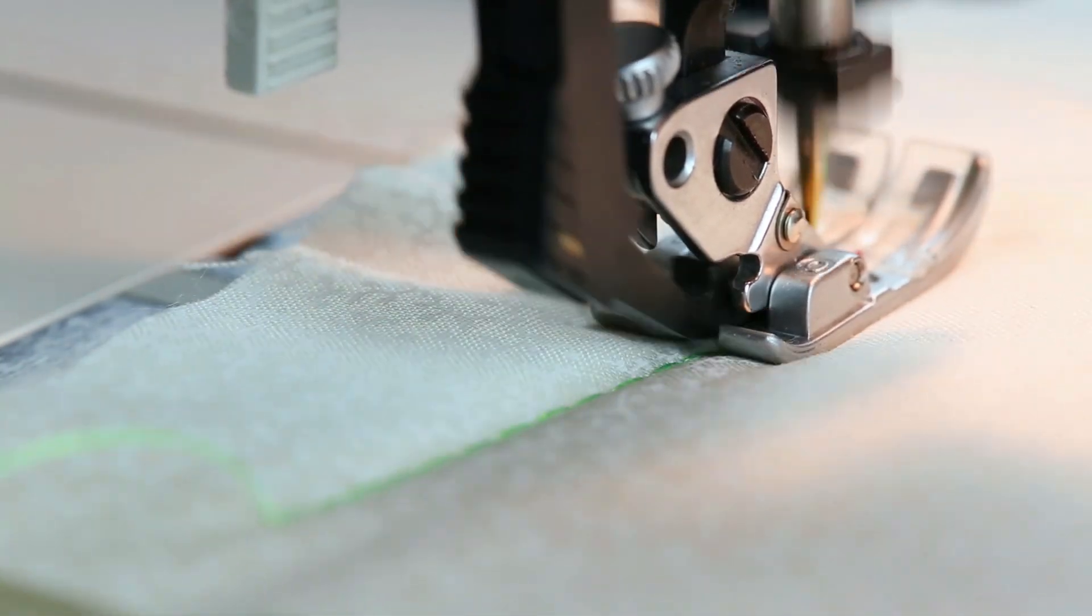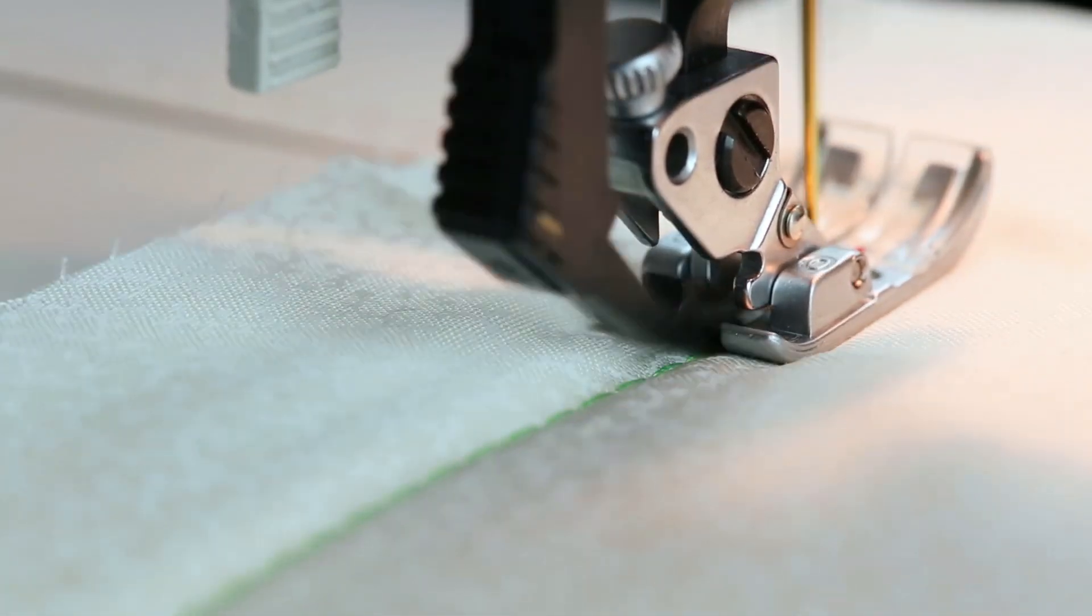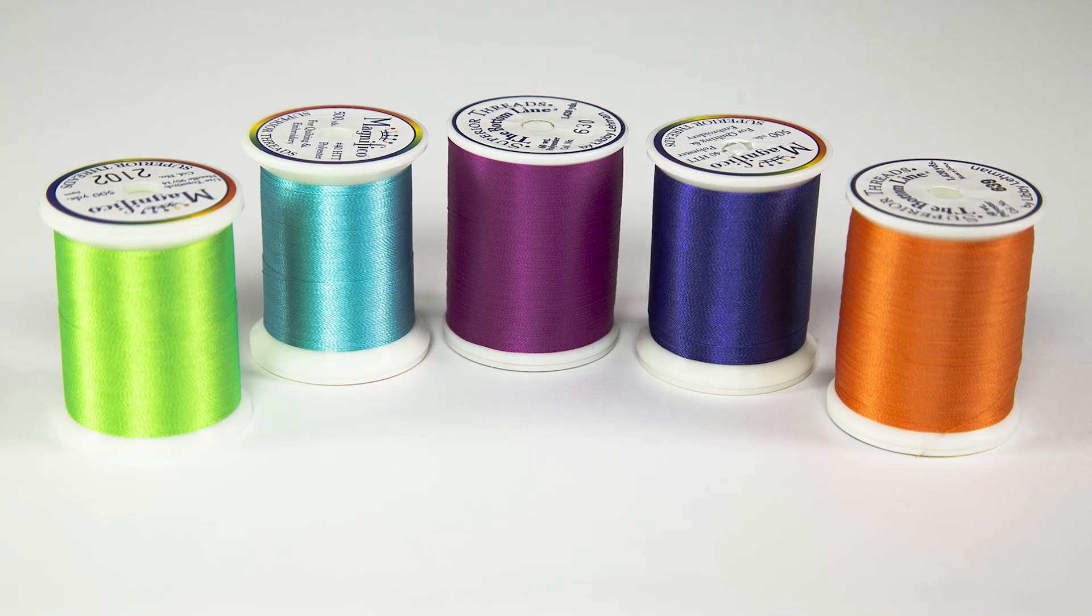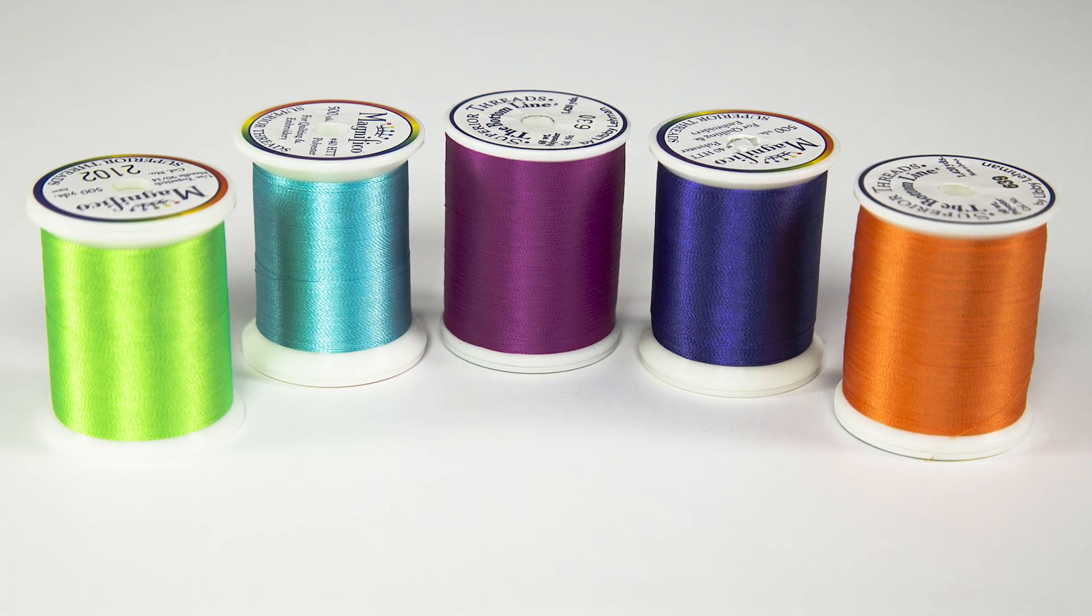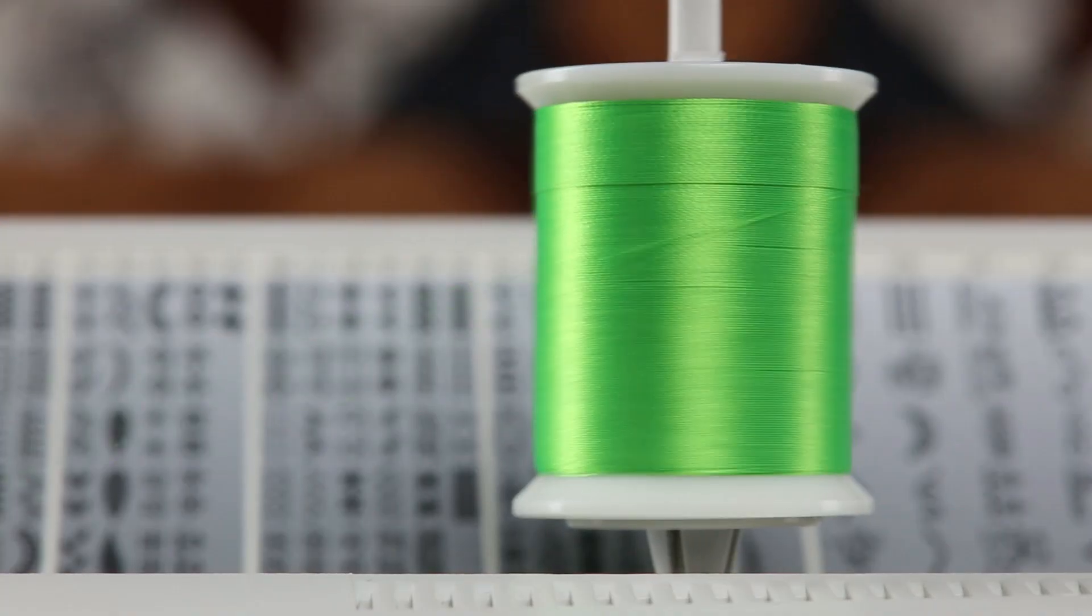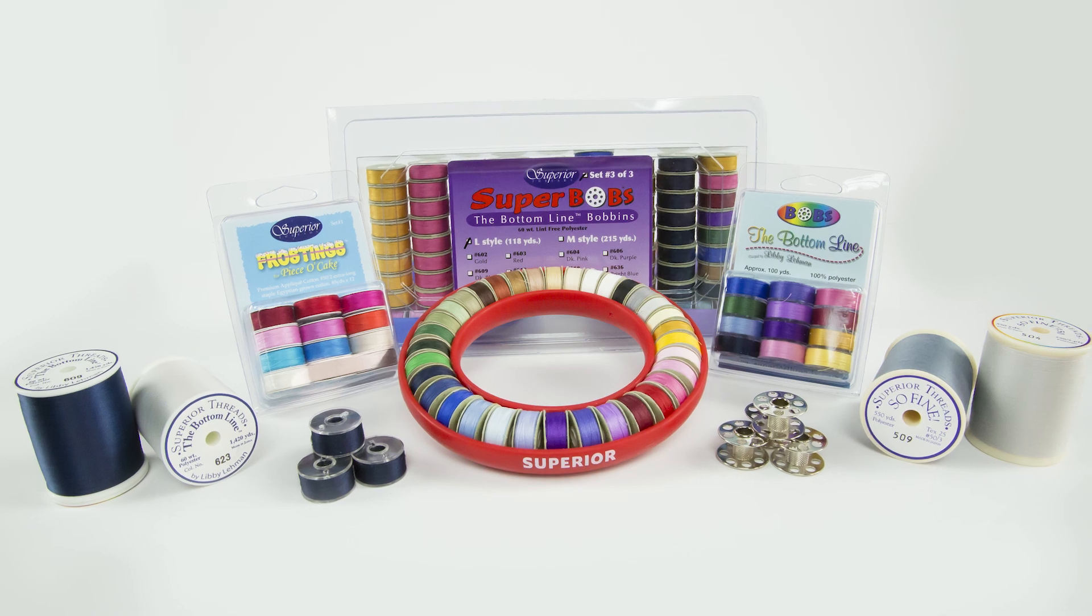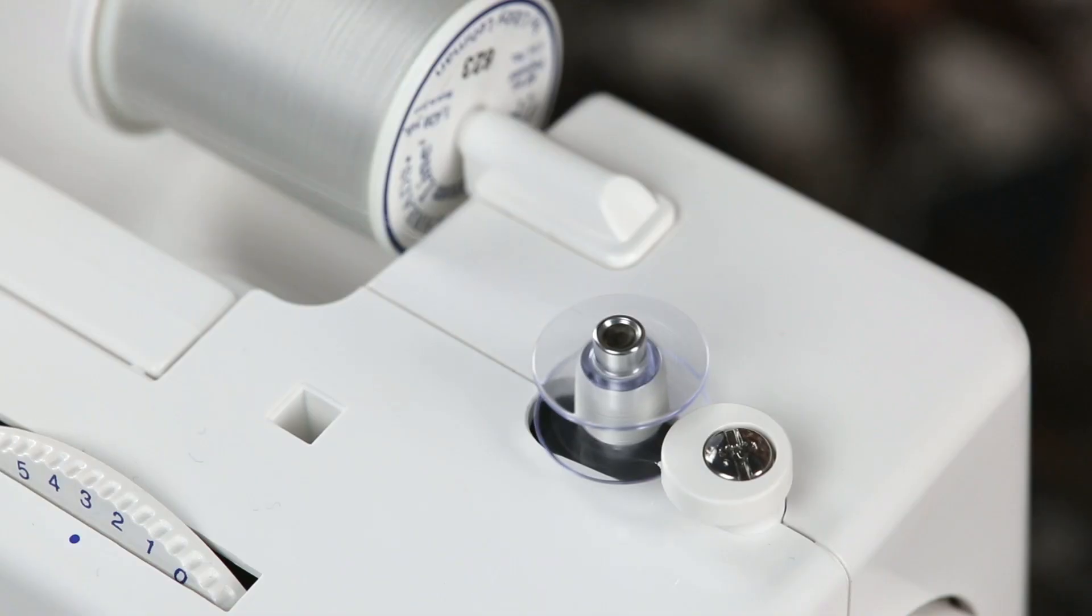Sewing machines are able to create stitches by combining two threads. The top thread sits on top of your sewing machine and goes through the needle while the bobbin thread is wound onto a bobbin and sits inside your bobbin case.